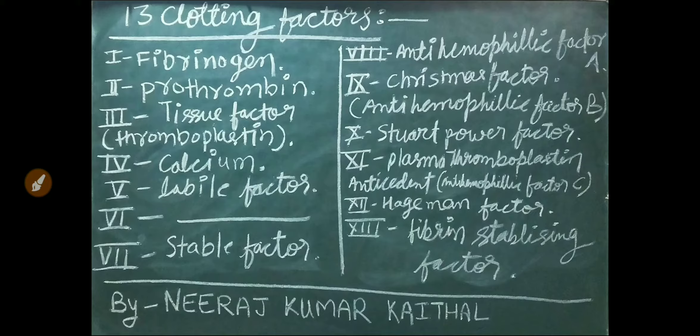All 13 blood clotting factors: Factor 1 Fibrinogen, Factor 2 Prothrombin, Factor 3 Tissue factor/Thromboplastin, Factor 4 Calcium, Factor 5 Labile factor, Factor 6 is Absent, Factor 7 Stable factor, Factor 8 Antihemophilic factor A, Factor 9 Christmas factor (also called Antihemophilic factor B), Factor 10 Stuart-Prower factor, Factor 11 Plasma thromboplastin antecedent (also called Antihemophilic factor C), Factor 12 Hageman factor, Factor 13 Fibrin stabilizing factor.